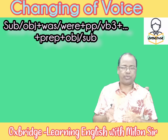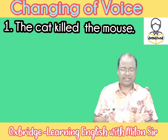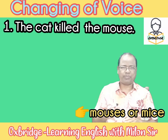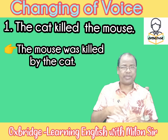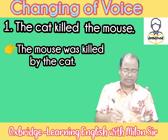Let's have a look at the first example: 'The cat killed the mouse.' Note that the plural form of mouse is mice. The passive form is: 'The mouse was killed by the cat.' Second example: 'She bought Asari on a festival.' The passive form is: 'Asari was bought on a festival by her.'